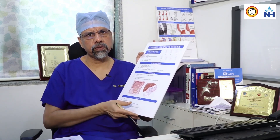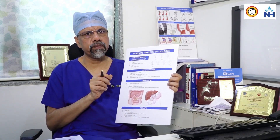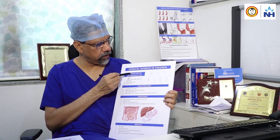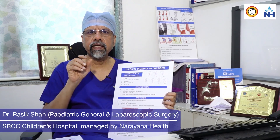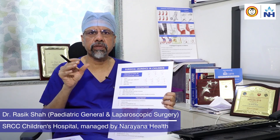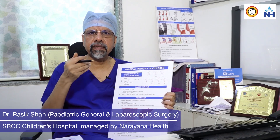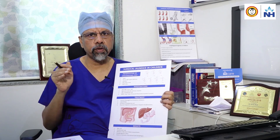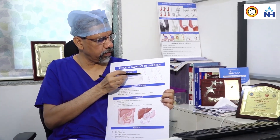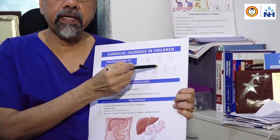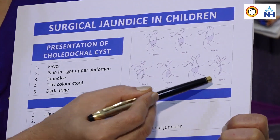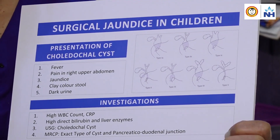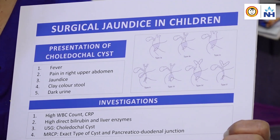The second common surgical cause of jaundice in children is choledochal cyst. Unlike biliary atresia, where the duct becomes narrow and atretic, in choledochal cyst the duct becomes large or cystic. Because it is large and cystic, bile does not flow easily into the small bowel. There is dilatation of the common bile duct, and the commonest variety is where the common bile duct becomes dilated and cystic.